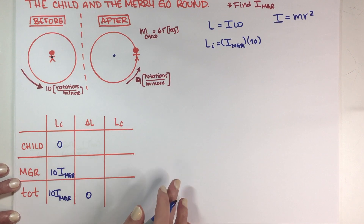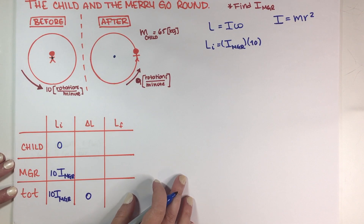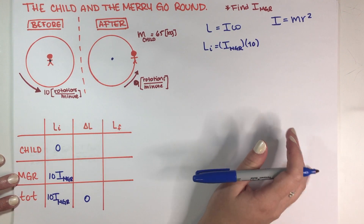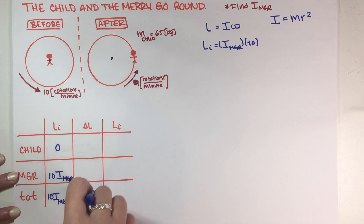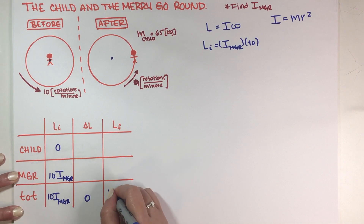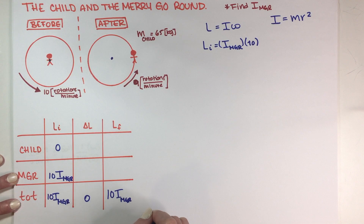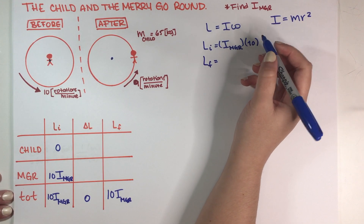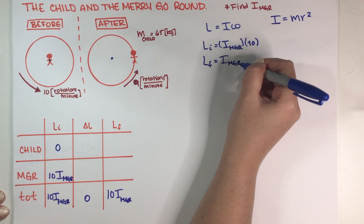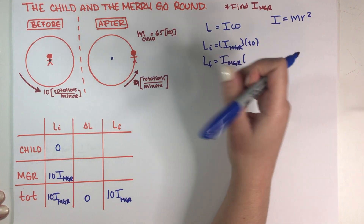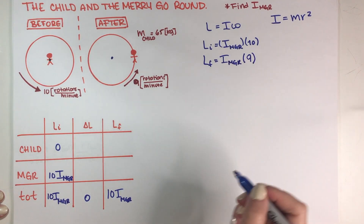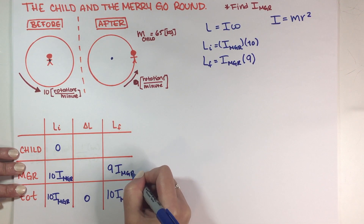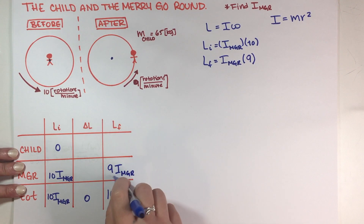The change in angular momentum is zero because the problem doesn't mention any friction at the axis — it's not rusty, there's no angular impulse, no losses. So the total is 10·I_merry-go-round. For the final scenario, L-final for the merry-go-round equals I_merry-go-round times the final angular velocity, which is 9, giving us 9·I_merry-go-round.